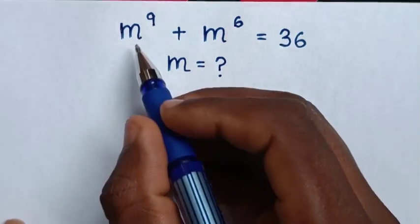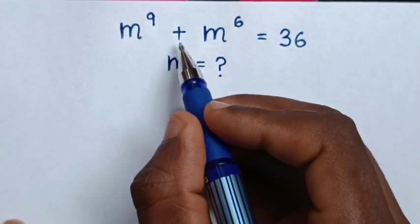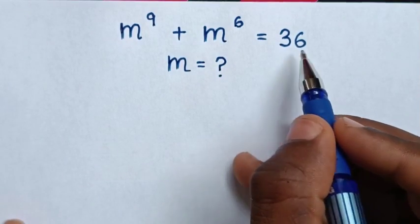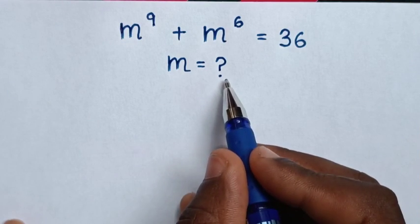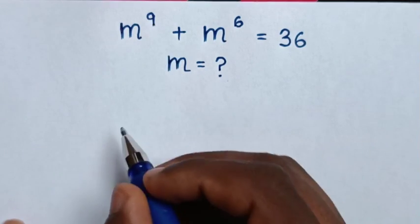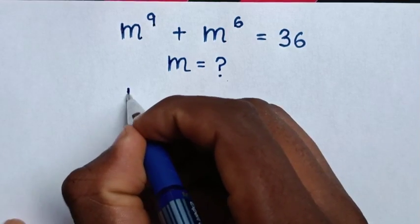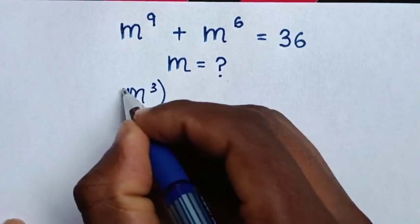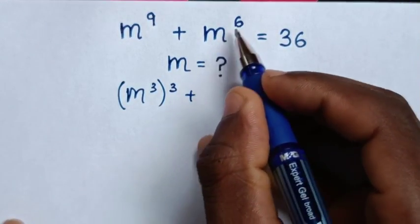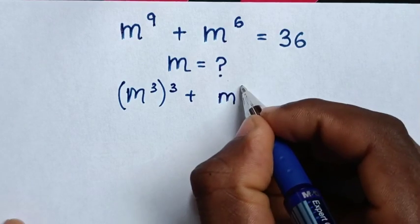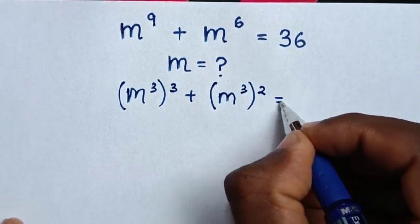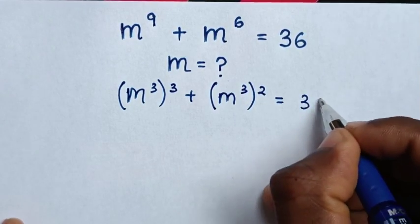Hello. How to solve m power 9 plus m power 6 is equal to 36, to find the value of m from this equation. So m power 9 is the same as m power 3 bracket power 3, then plus m power 6 is the same as m power 3 bracket power 2, is equal to 36.